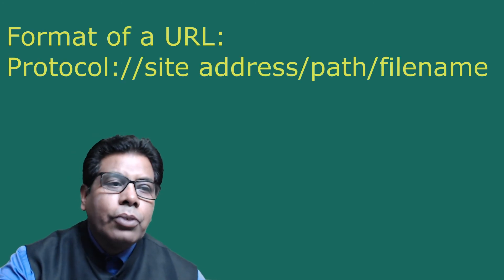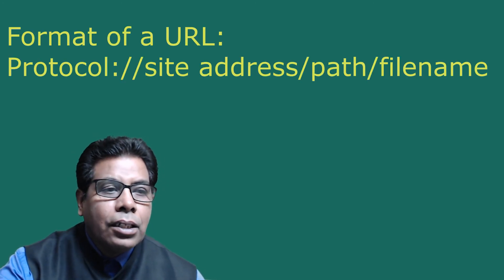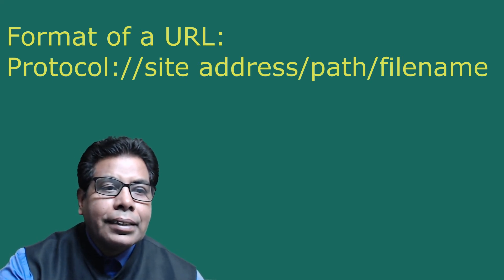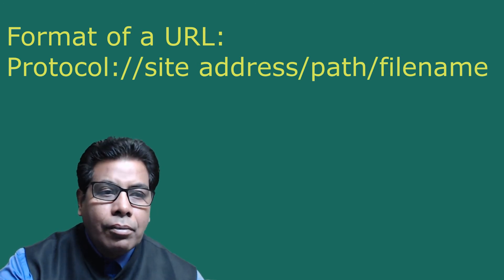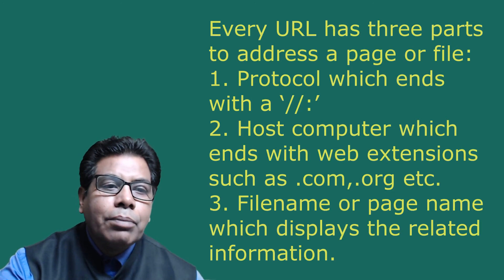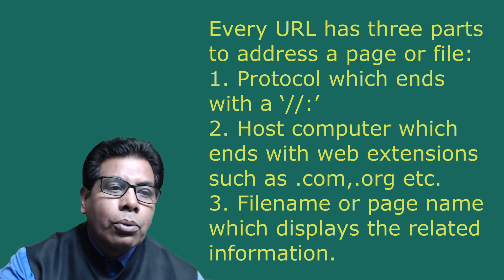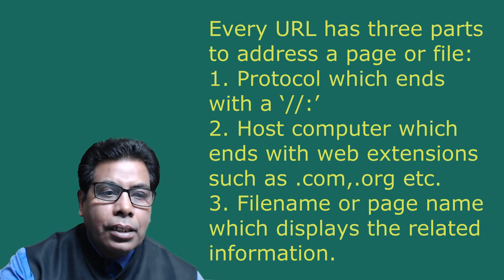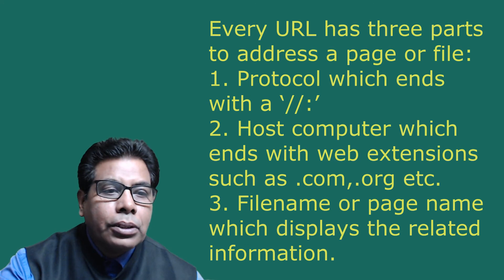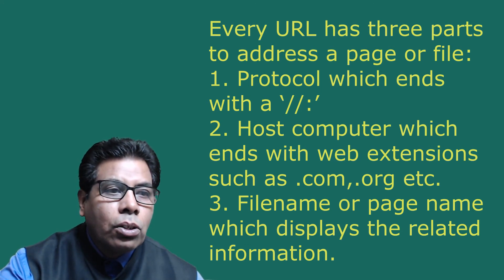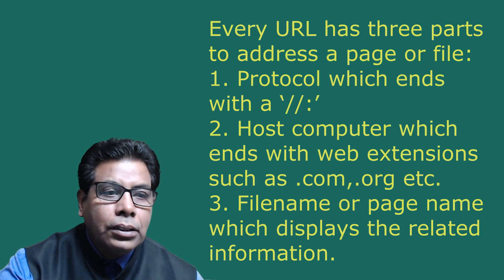Web software such as your browser uses the URL to retrieve a file from the computer on which it resides. The format of a URL is: protocol, colon, then backslashes, then site address, then single backslash, path, and then backslash again and file name. Every URL has 3 parts: first is the protocol which ends with a double slash, then the host computer which ends with a web extension such as .com, .org, etc.